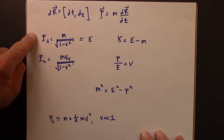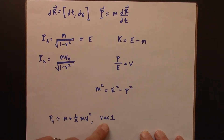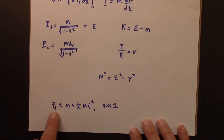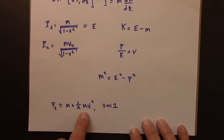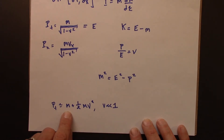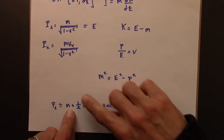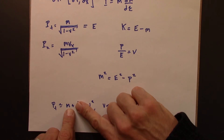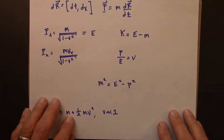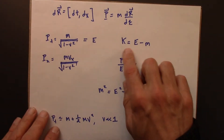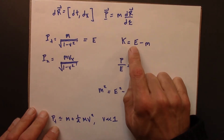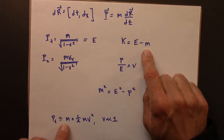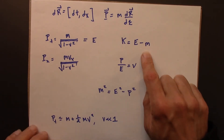If you take this equation in the small-v limit, the non-relativistic limit, you get that pt, or the energy, is m plus half mv². If you convert to SI units and v is zero, that becomes mc². In general, we define the kinetic energy as the energy minus the rest energy — the energy associated with simply existing, not necessarily moving.